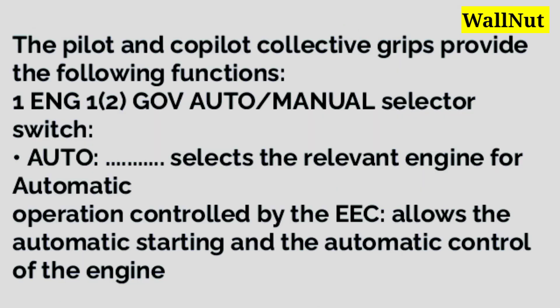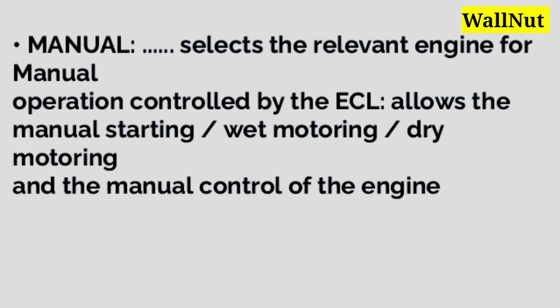The pilot and co-pilot collective grip provides the following functions. Engine governor auto/manual selector switch. Auto: selects the relevant engine for automatic operation controlled by the EEC, allowing automatic starting and automatic control of the engine. Manual: selects the relevant engine for manual operation controlled by the ECL, allowing manual starting, wet motoring, dry motoring, and manual control of the engine.